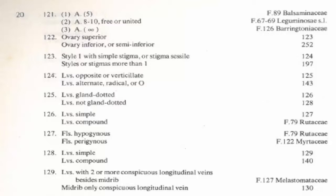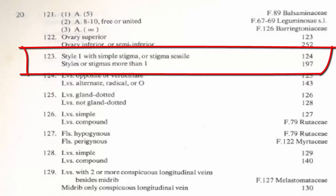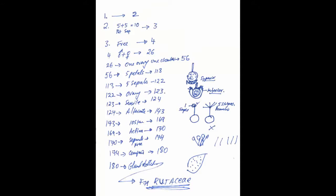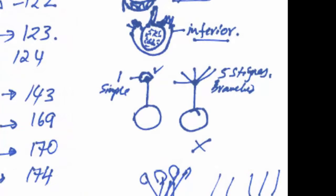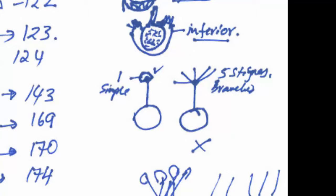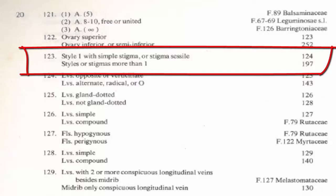Step 123 is asking: style one with simple stigma, and the stigma sessile, or styles and stigmas more than one? When we looked at the ovary — the ovary was like this, the style was like that, and then this was the stigma. Sometimes you will have one style and then projections giving you five stigmas, and here just one simple stigma. It is simple and sessile, so that gives us step 124.